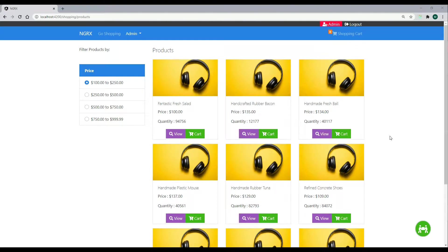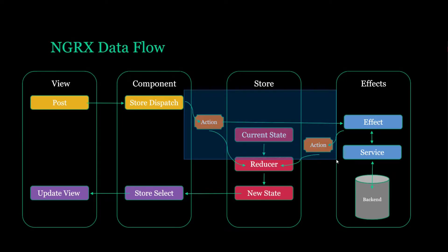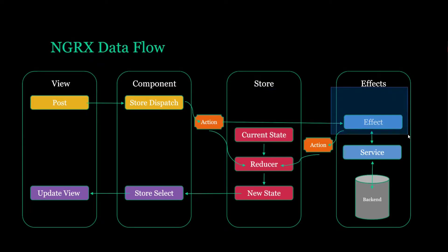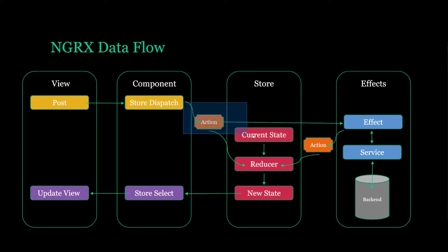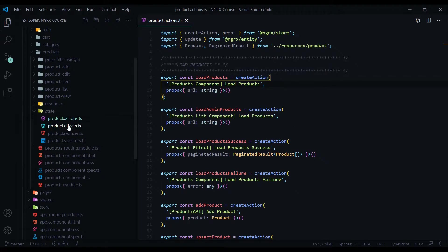Now that we're able to get an individual product from the store by its ID, what if the product is not in the store? We'll need to make an API call and get the individual product by its ID and then add it to our store. The steps we need to complete are very similar to when we were loading a list of products. Let's start with the actions, back inside our products module — open up the action file, the effect file, and the reducer file.